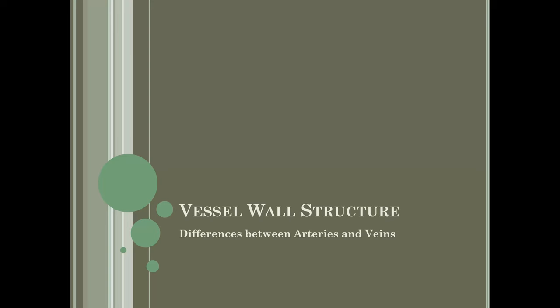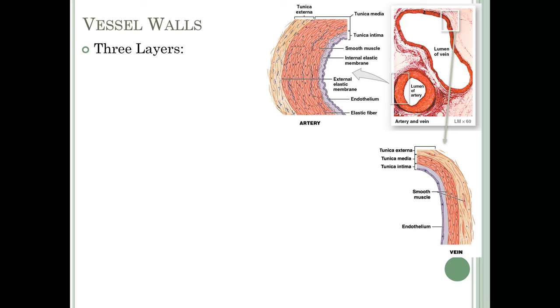We'll start with a discussion of vessel wall structure and some differences between arteries and veins. Capillaries are treated separately because they are the most different from the other vessels. Vessel walls — mainly arteries and veins — have three layers. The tunica intima is the innermost layer, shown in purple in both the artery and vein images.